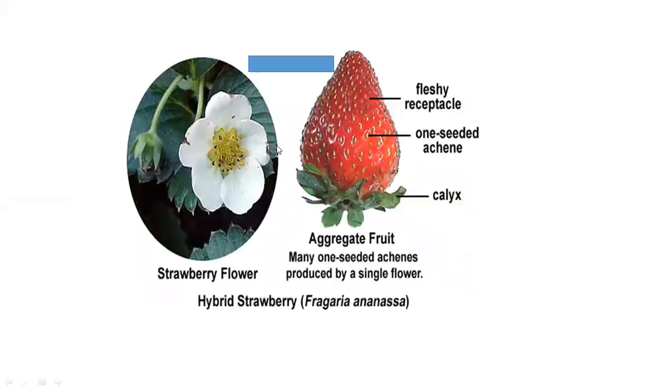This is a strawberry flower, and this is the strawberry fruit. It has a fleshy receptacle with seeds on the outside and a calyx. This is an aggregate fruit with a fleshy receptacle. Each seed develops from one carpel. This is a single flower but with many ovaries, and the entire thalamus develops into the fruit.